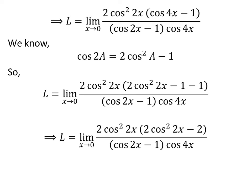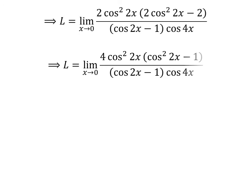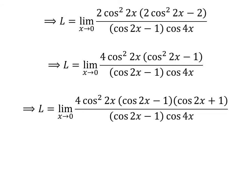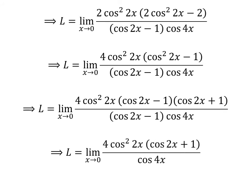Here I have further simplified the above expression. I have taken out the common factor 2 in the numerator. So L is equal to limit of 4 times square of cosine of 2 times x times square of cosine of 2 times x minus 1, upon cosine of 2 times x minus 1 times cosine of 4 times x, as x approaches 0. Square of cosine of 2 times x minus 1 can be expressed as cosine of 2 times x minus 1 times cosine of 2 times x plus 1. I have cancelled out the common factor cosine of 2 times x minus 1 in the numerator and the denominator. So L is equal to limit of 4 times square of cosine of 2 times x times cosine of 2 times x plus 1, upon cosine of 4 times x, as x approaches 0.